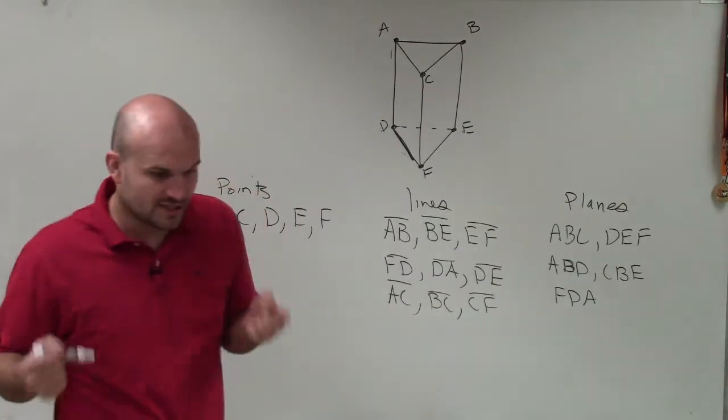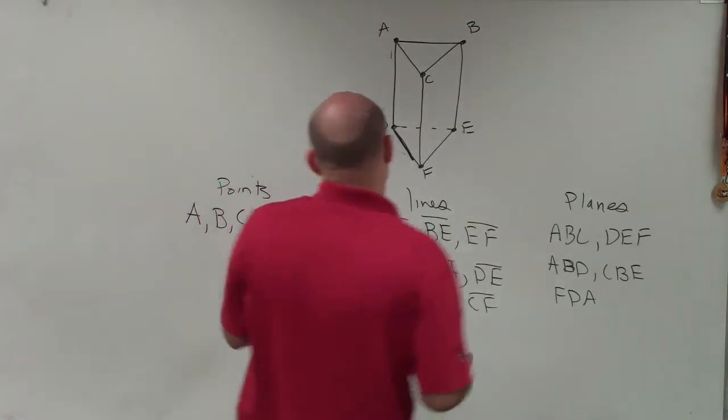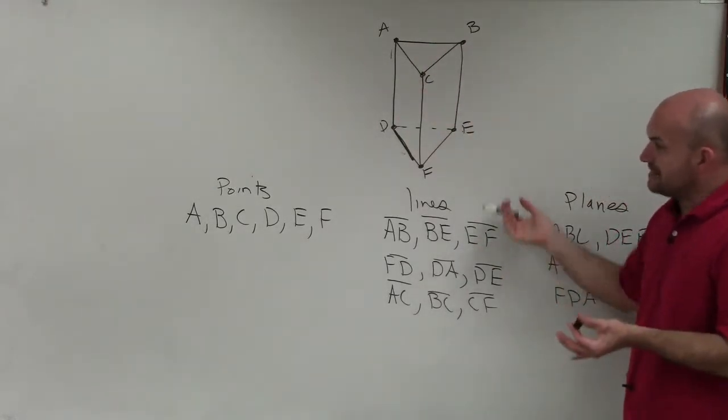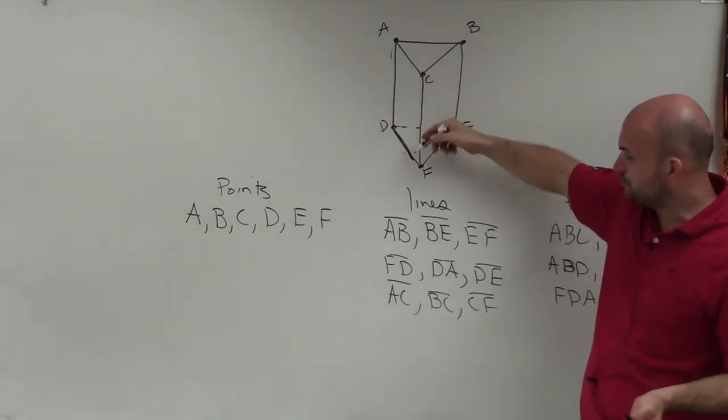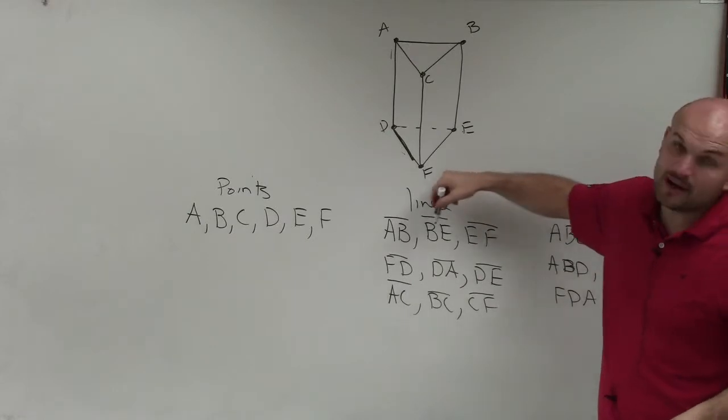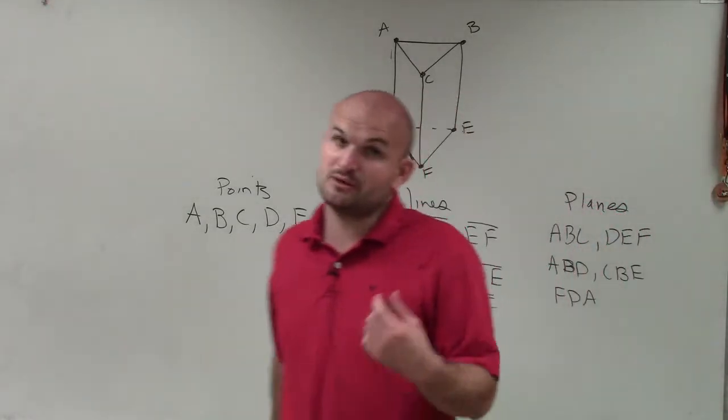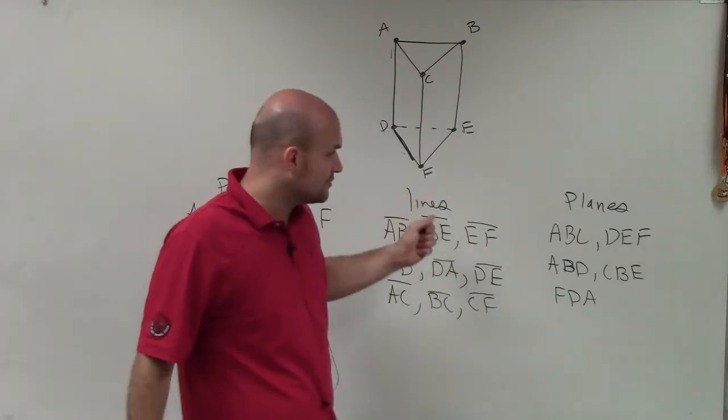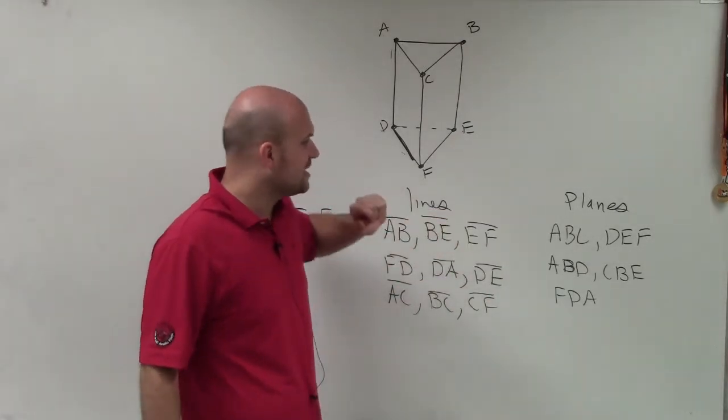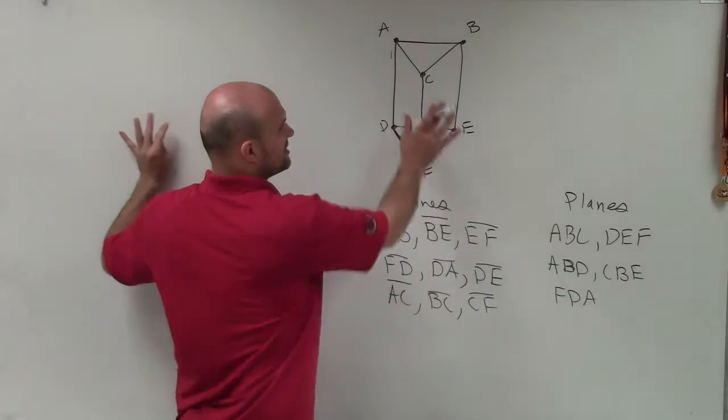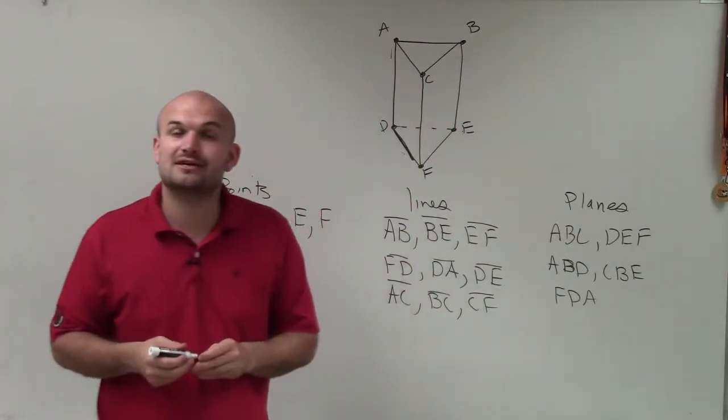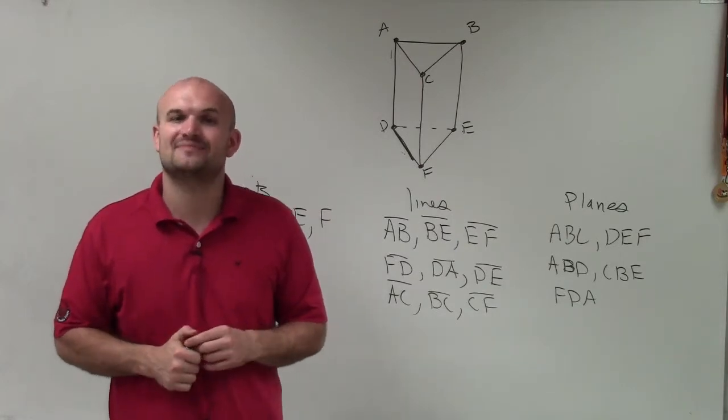Okay? So just a reminder, when we're labeling our points, again, those are going to be the locations of where those lines come together. Our lines are going to be what's connecting our two points and make sure that we represent them correctly. They're not extending indefinitely, so they're line segments. So I'm going to draw lines over them. And then the planes are going to be pretty much like the sides of the figure that we just used three points to represent. So there you go, ladies and gentlemen. That is how you label a point, line, and a plane. Thanks.